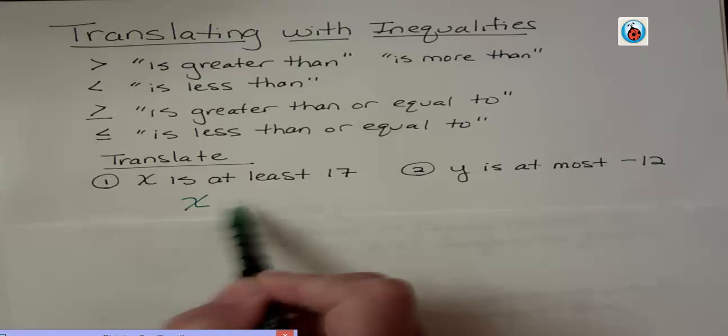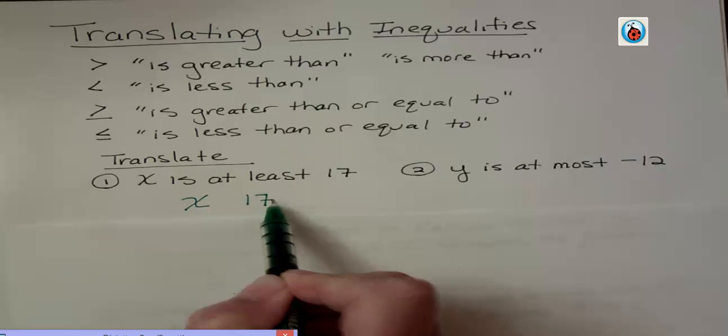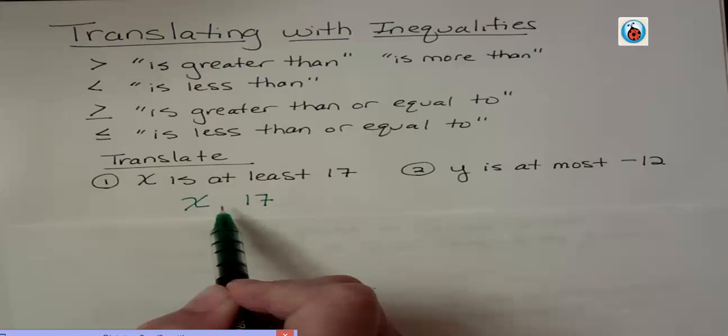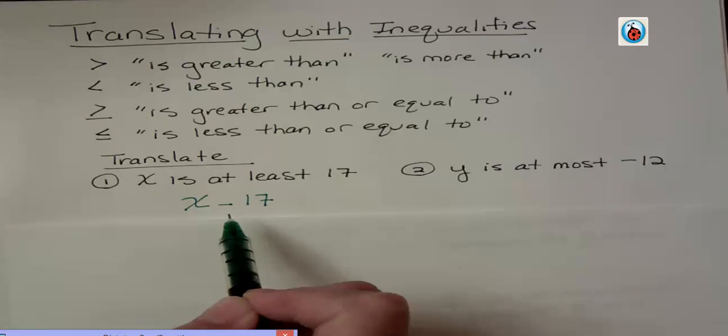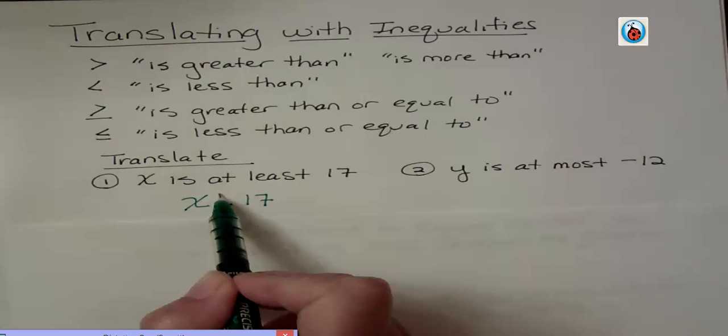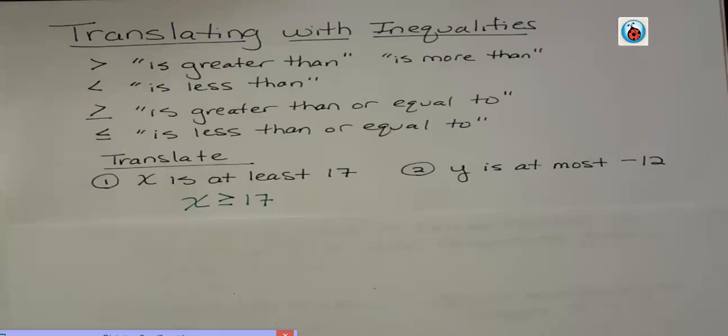So if you were saying the person has to be at least 17 to get in, they could be exactly 17, equal to, or they could be more than or greater than 17. So is at least actually means greater than or equal to.